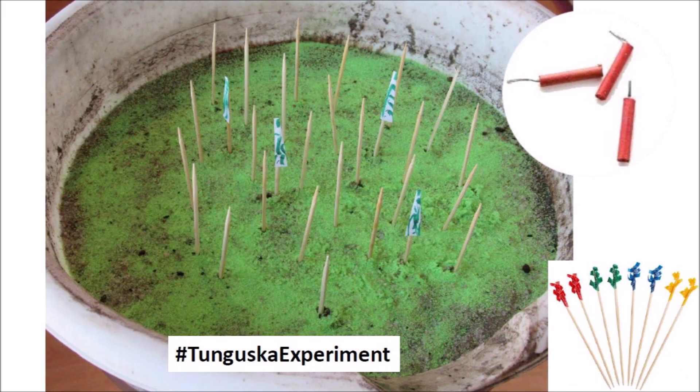If you want to try modeling the effect of a Tunguska airburst, you can set up a bowl of dirt with some toothpicks to represent the trees. Hang a firecracker on top of the toothpicks and light the fuse. Wear goggles, earplugs, and protective clothing. Keep a safe distance from the explosion — you do not want to be impaled by a flying toothpick. You can repeat the experiment with a firecracker at different heights. Let us know if the airburst produced any depressions that would resemble Carolina Bays at all. Post your videos to YouTube with the hashtag TunguskaExperiment and share the links. Unfortunately, fireworks are prohibited where I live, otherwise I would try the experiment myself.